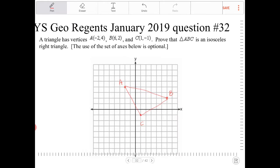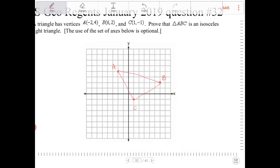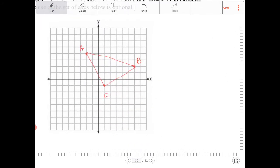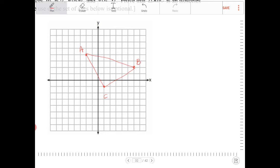So it says to show that ABC is an isosceles right triangle. Well, in order for us to do that, we need to find out the side lengths of AC, BC, and AB.